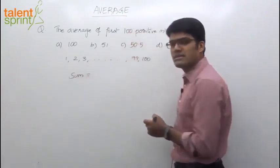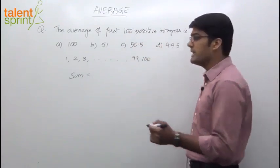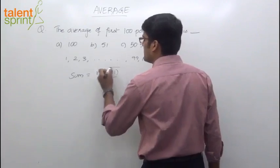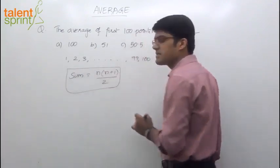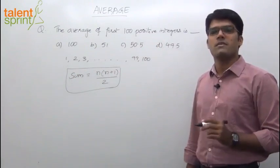first of all, you get the sum of these numbers. How do you find out the sum of first n natural numbers? There is a shortcut formula. You can take it as n into n plus 1 by 2. I am sure all of you are aware of this. The sum of first n natural numbers as n into n plus 1 by 2.